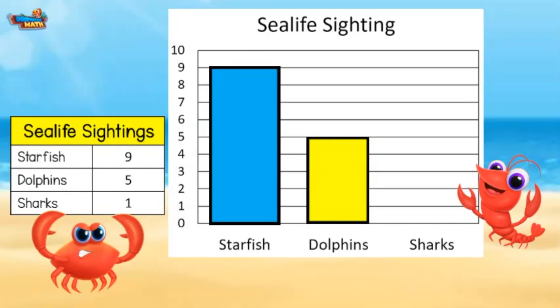And we saw 1 shark — scary! Its bar will line up with the 1. Now we can use the bar graph to interpret the data.